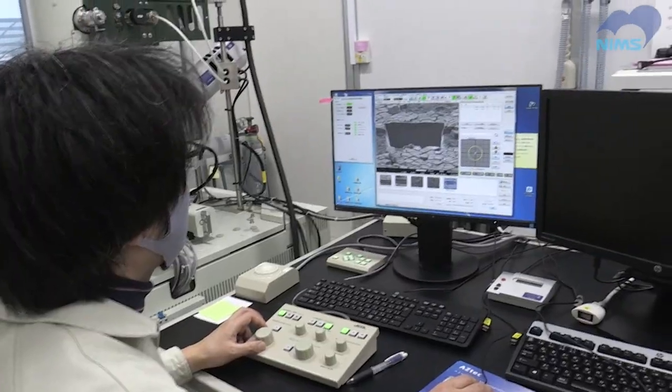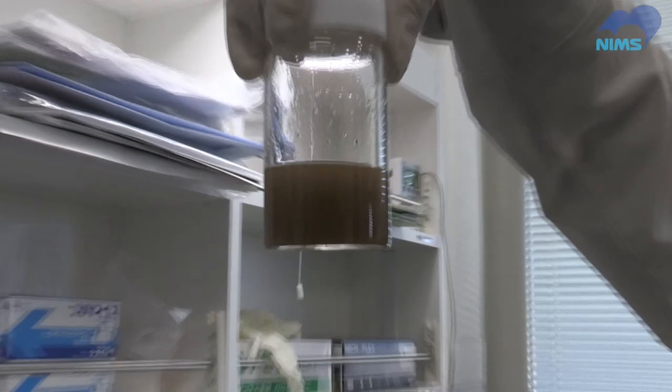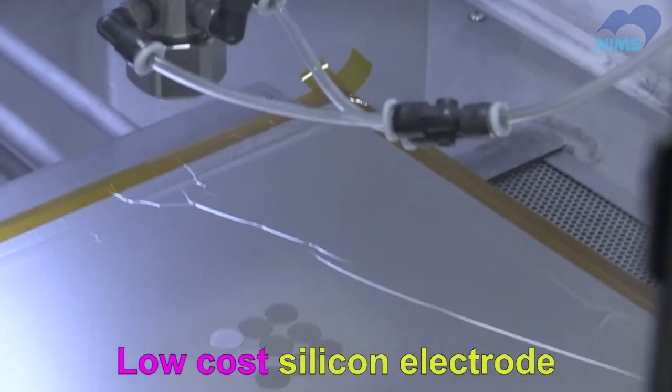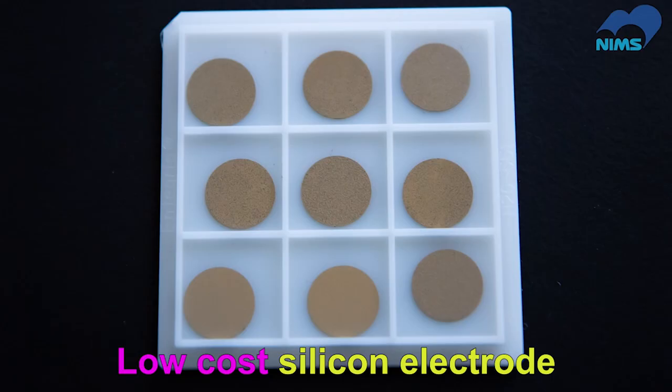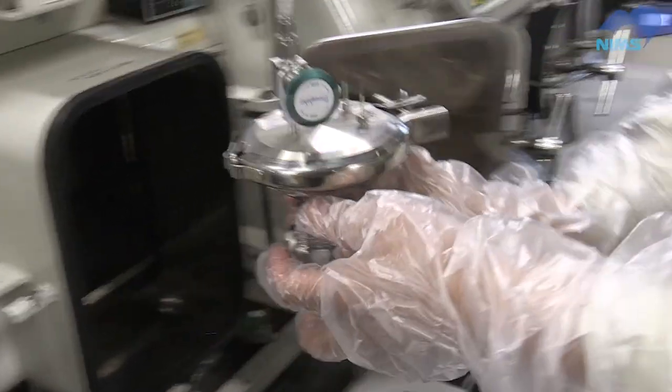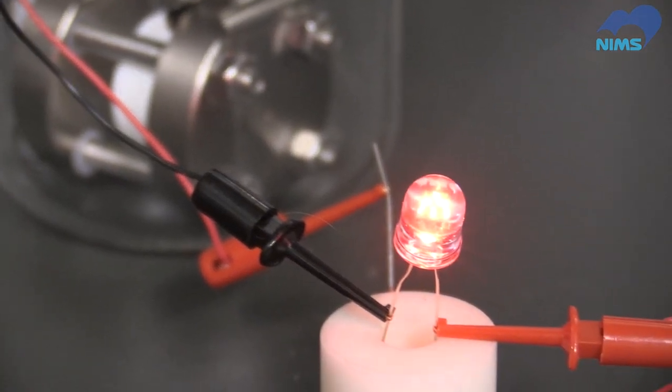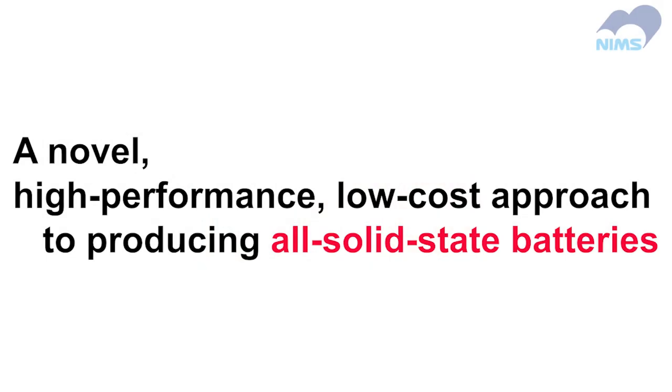We recently found that volume expansion can offer a great advantage in the development of a low-cost approach to producing high-performance silicon anodes for batteries. In this video, we'll share the story of how we came up with the idea to use volume expansion in preparing silicon anodes, greatly improving their performance.